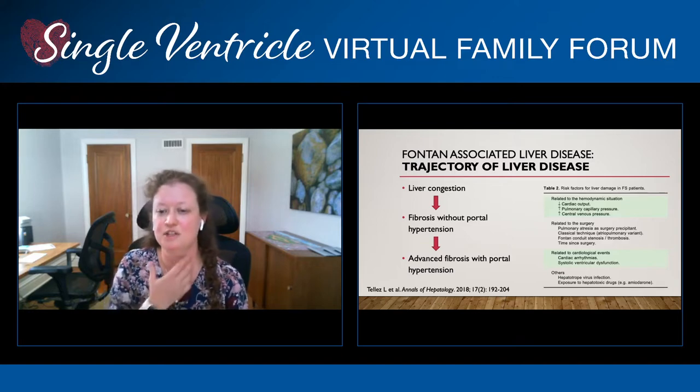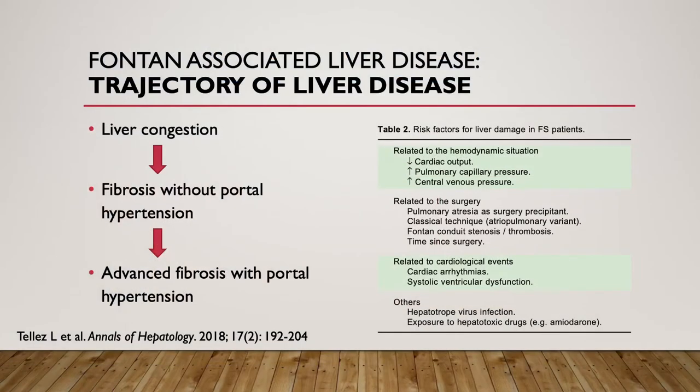There are also risk factors related to arrhythmias that can affect the liver and ventricular dysfunction. There are also patients who are born with other liver diseases that can further impact the liver. When you have the combination of Fontan physiology and a secondary liver disease, those patients are at higher risk for developing advanced liver disease in the future. So we do screen for some of those diseases over time if we're worried about how quickly liver disease is progressing.